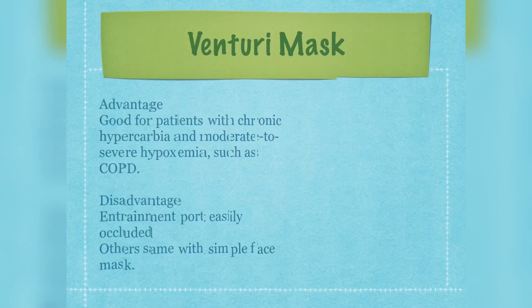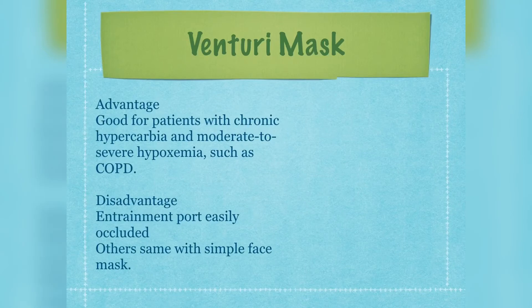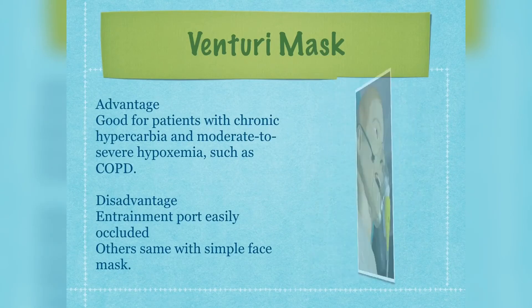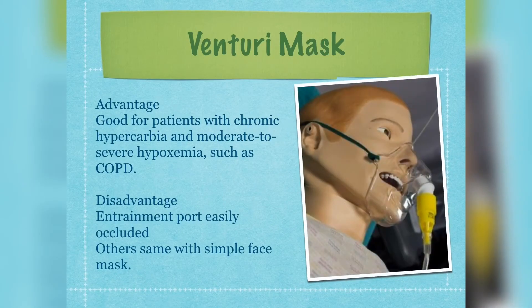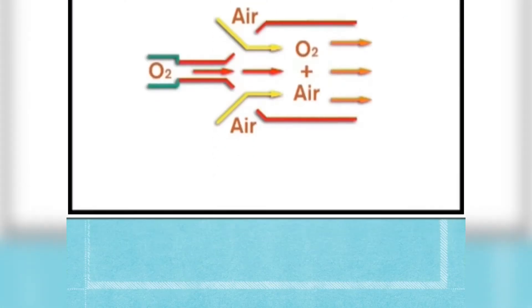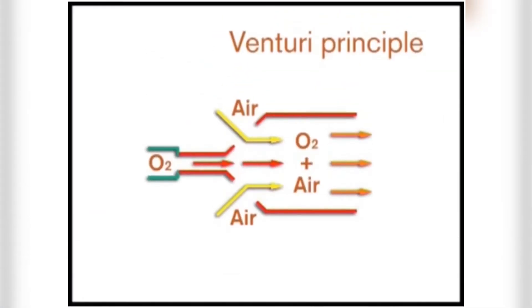Advantages: good for patients with COPD. Disadvantages: the entrainment port is easily occluded; others are the same as the simple face mask. The Venturi mechanism works by combining 21% room air with pure oxygen, which mix together in order to deliver the desired oxygen concentration during each breath.